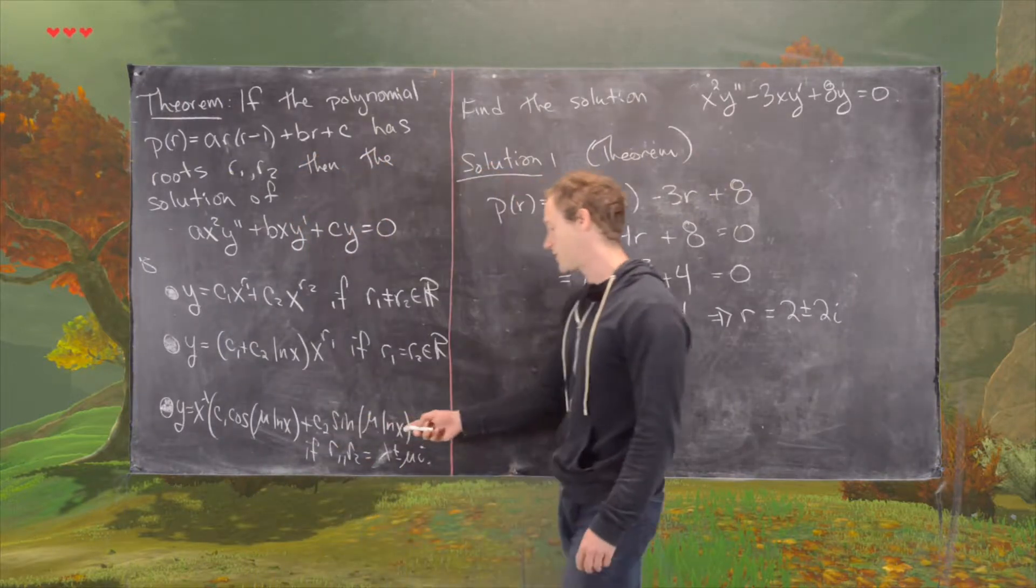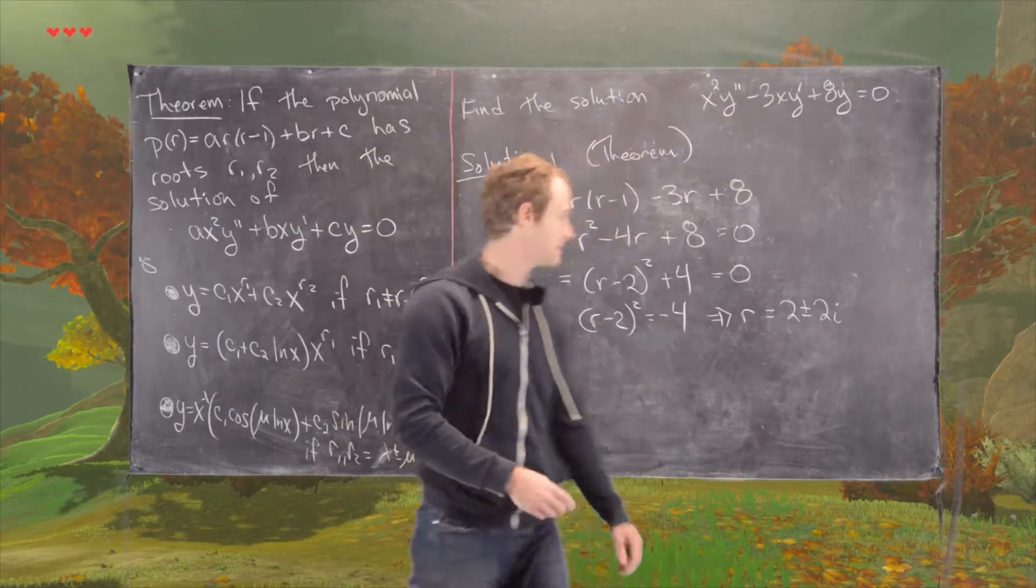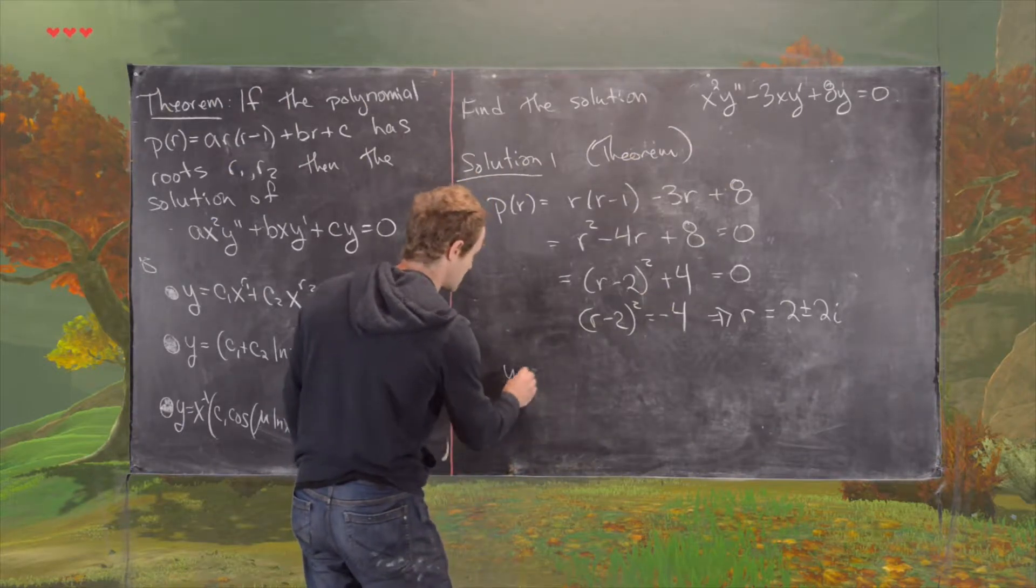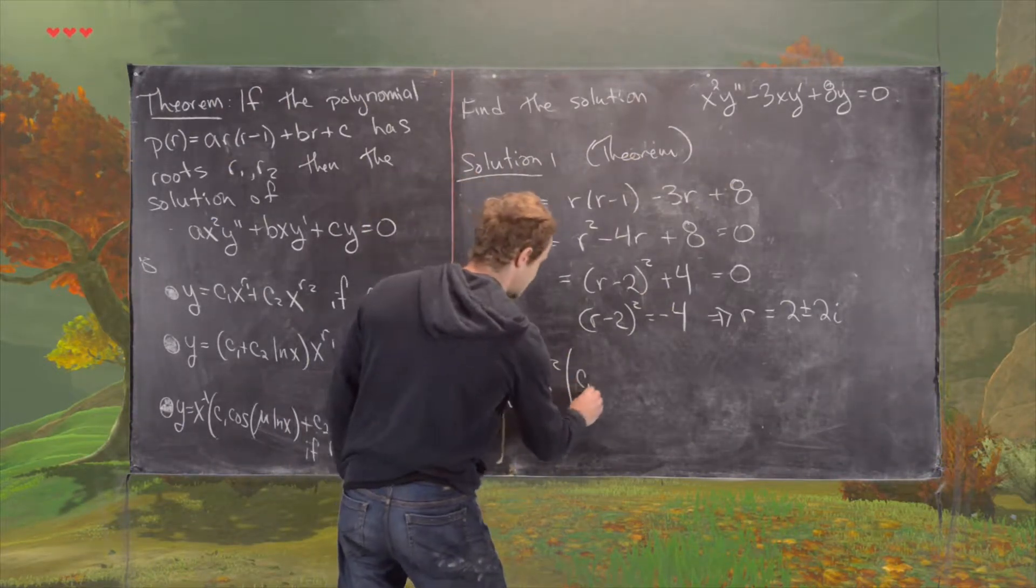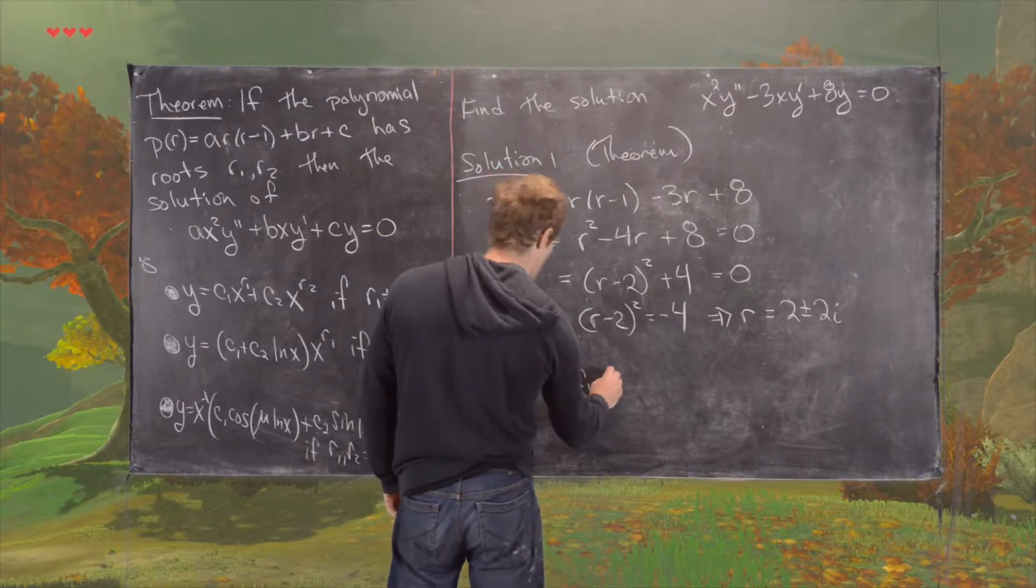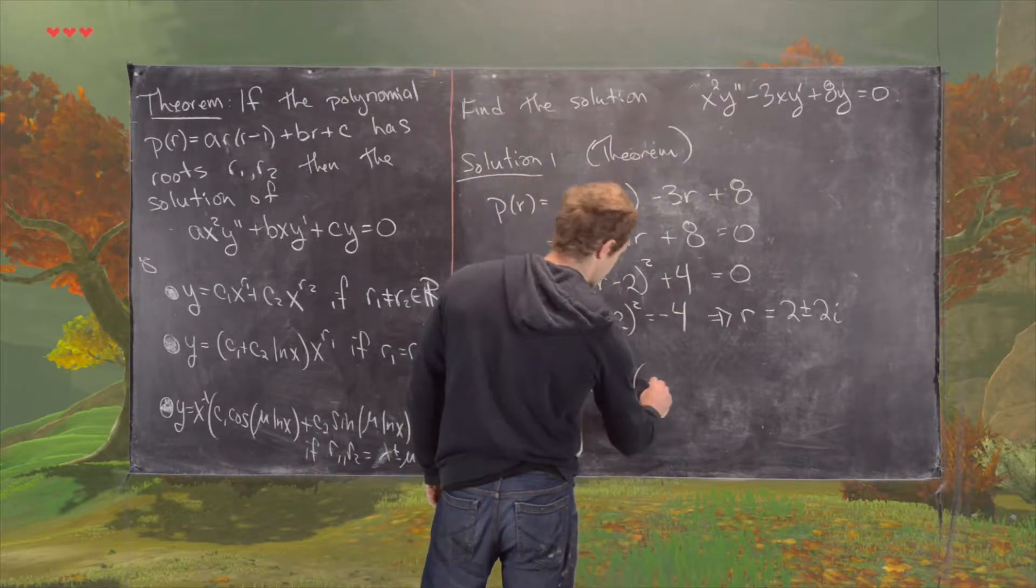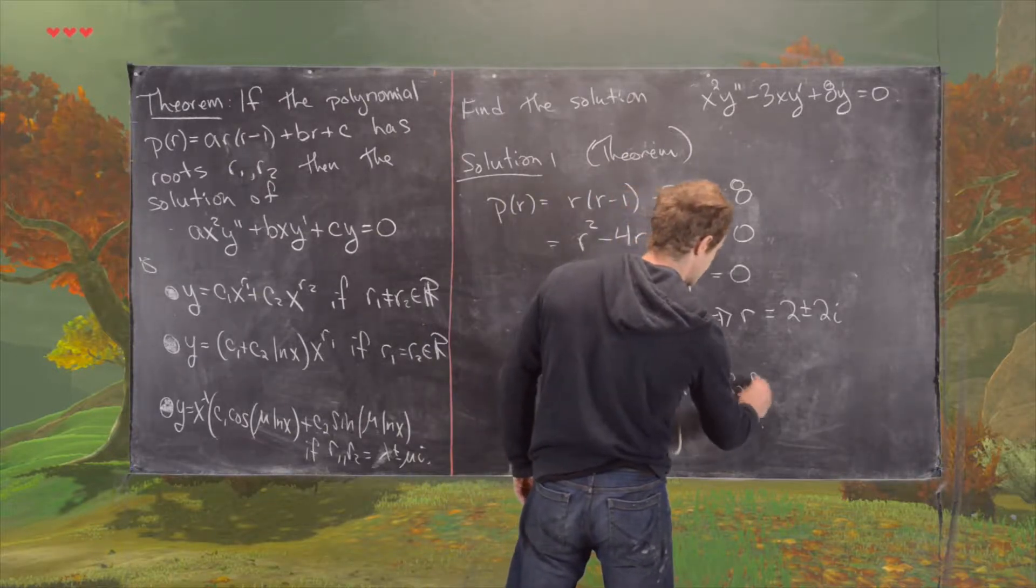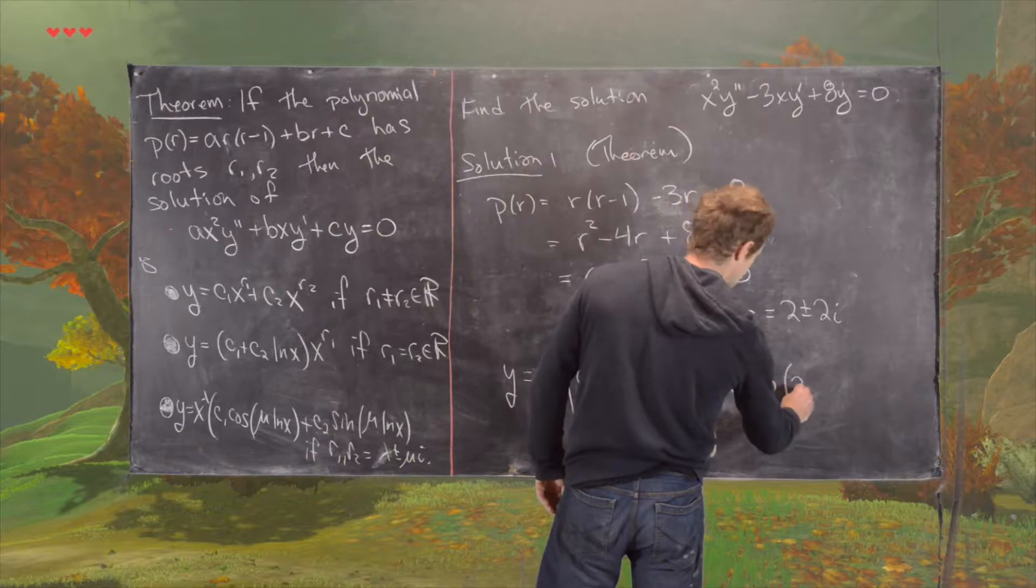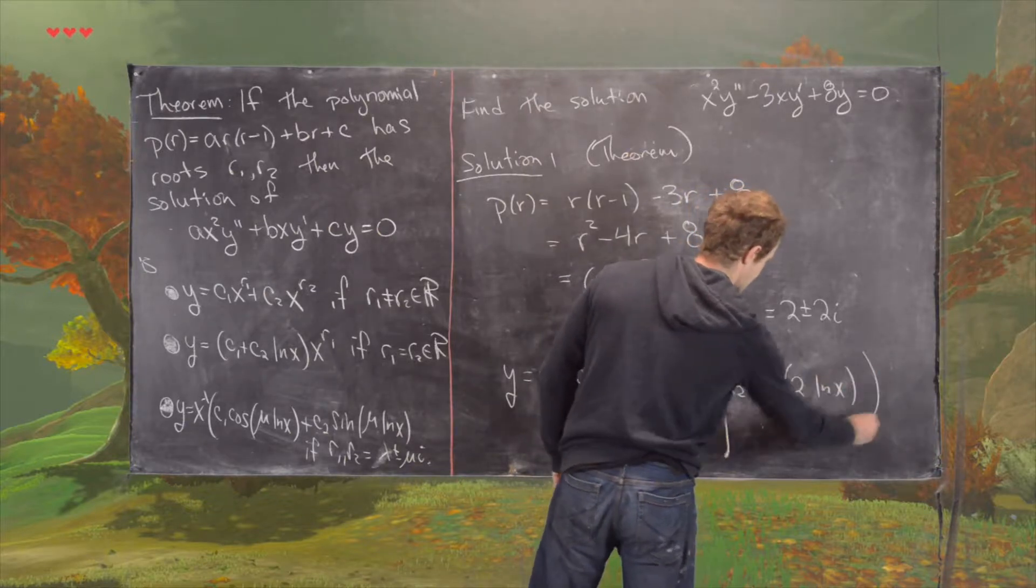That means we're down here at this third type of solution. Now we can just write that down. We have y equals x squared, and then we have c1 cosine times 2 natural log of x plus c2 times sine times 2 natural log of x.